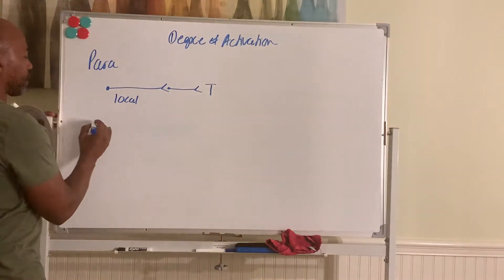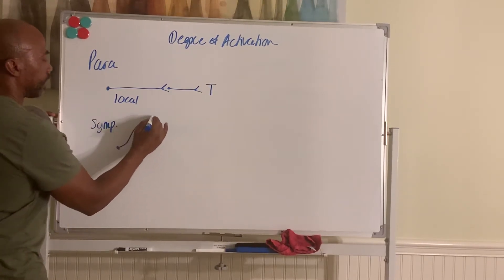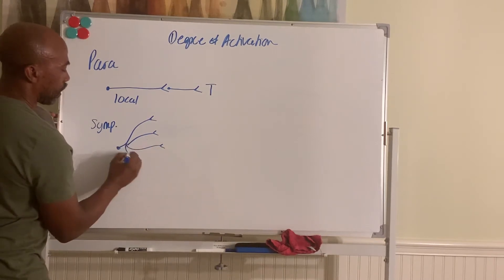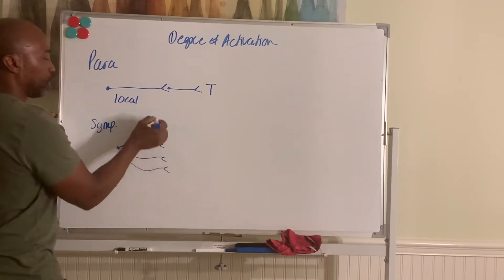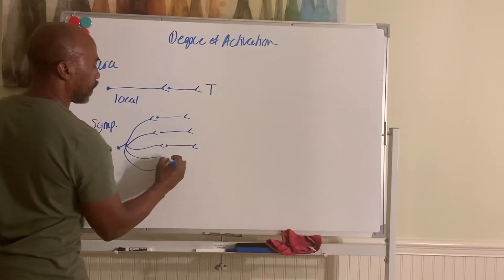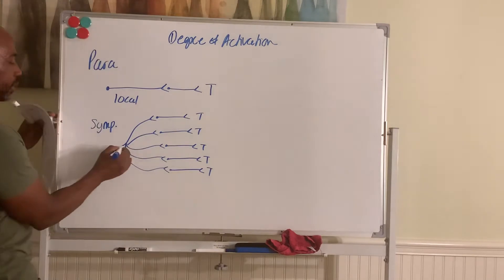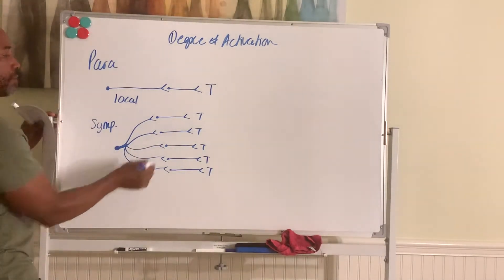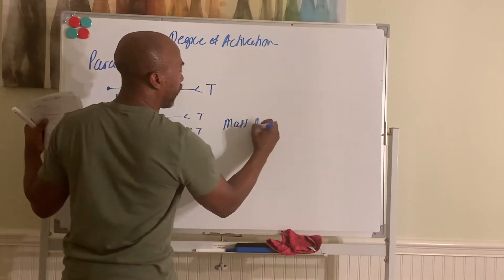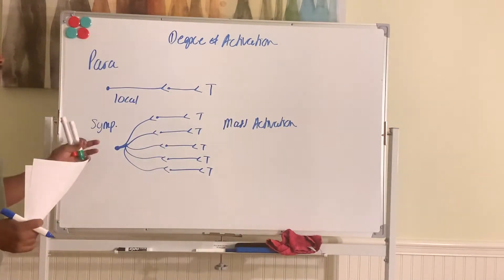This is not the case for the sympa. In the sympa division here, the pre-neuron may have a bunch of branches, branch profusely like so. And then each of these pre's will synapse with a different post, which then give you different targets. So one neuron here, this one neuron here can activate multiple targets. So the sympathetic division does what we call mass activation or global activation.